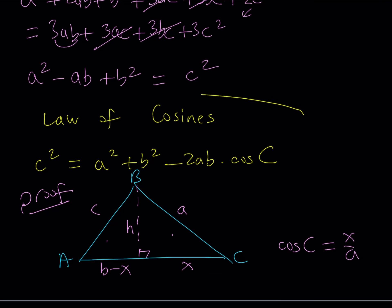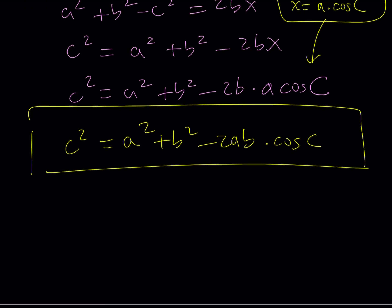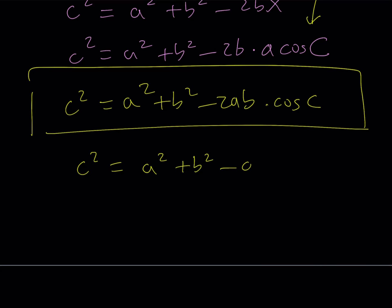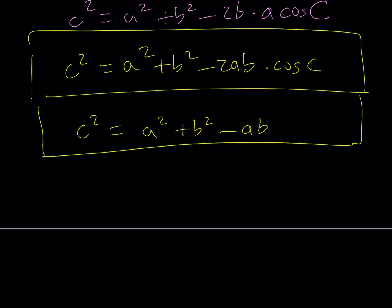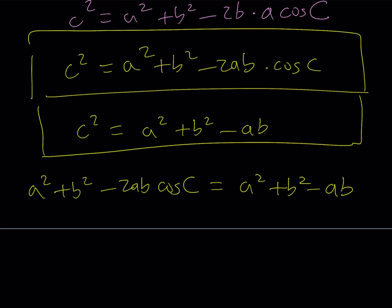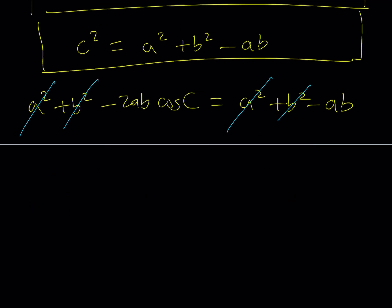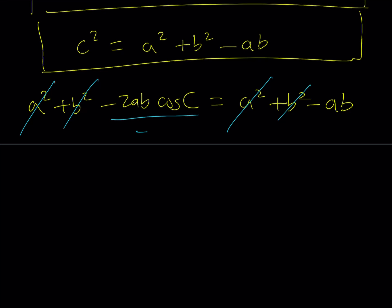So that's the law of cosines, and now I'm going to use it for my expression. My expression gave me C squared equals A squared plus B squared minus AB, while the law of cosines gives C squared equals A squared plus B squared minus 2AB cosine C. Setting these equal, A squared and B squared cancel, and dividing both sides by negative 2AB gives cosine C equals 1/2. Since we're in the first quadrant with a positive value, angle C equals 60 degrees, or pi over 3 radians.